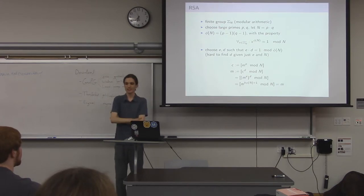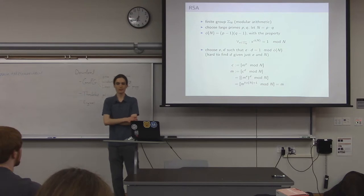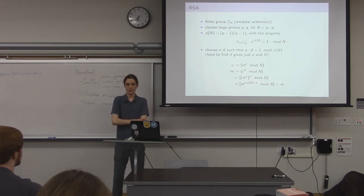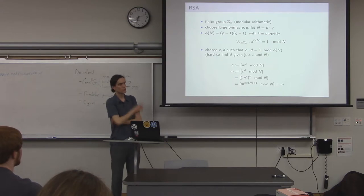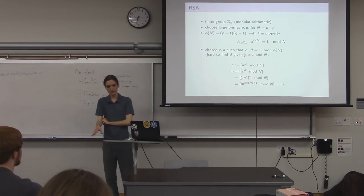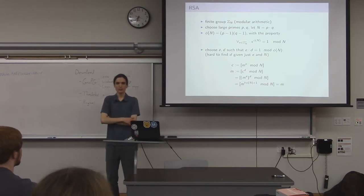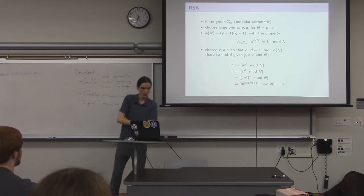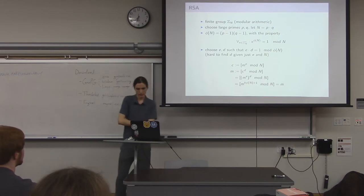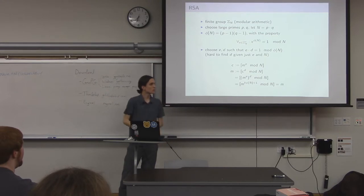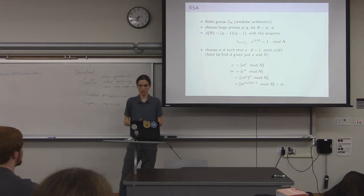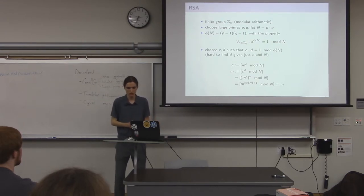The security of RSA rests on number-theoretical problems we hope are hard. If all you have is e, it's hard to get back to d. To get d you need phi(n), to know phi(n) you need p and q, and for that you'd have to factor n back into its prime factors — which is really hard when n is that large. Similarly, given the ciphertext m^e, computing a discrete logarithm to get m back is also very hard in this large space.